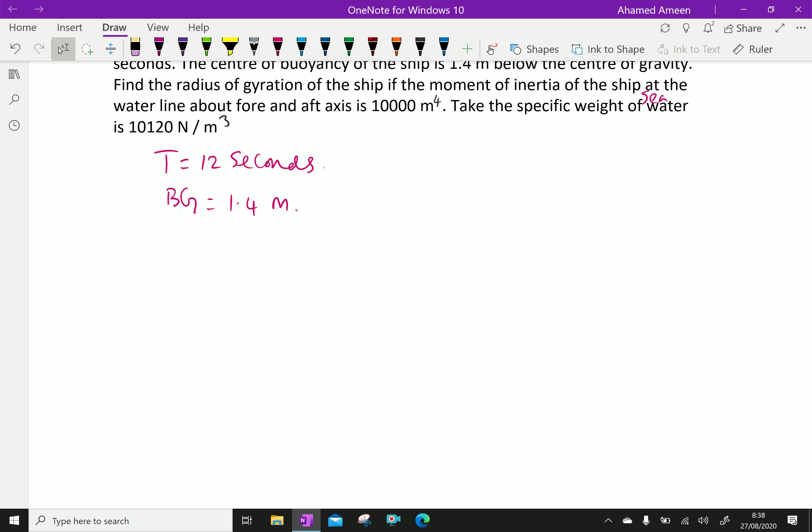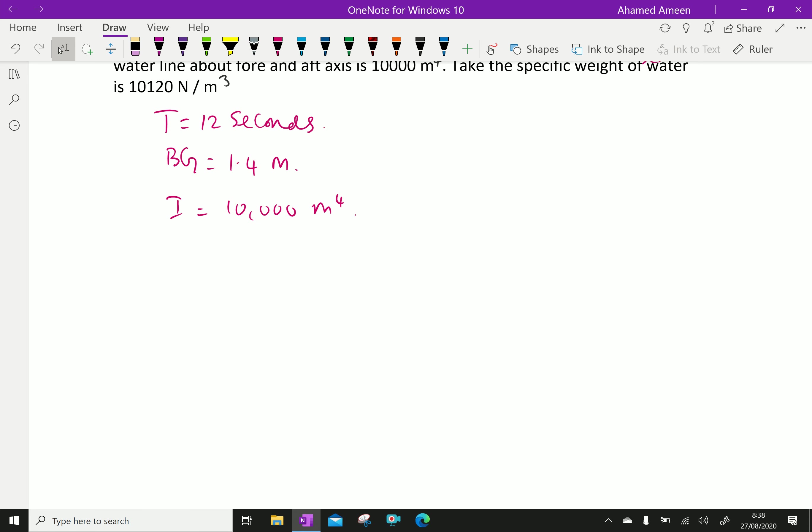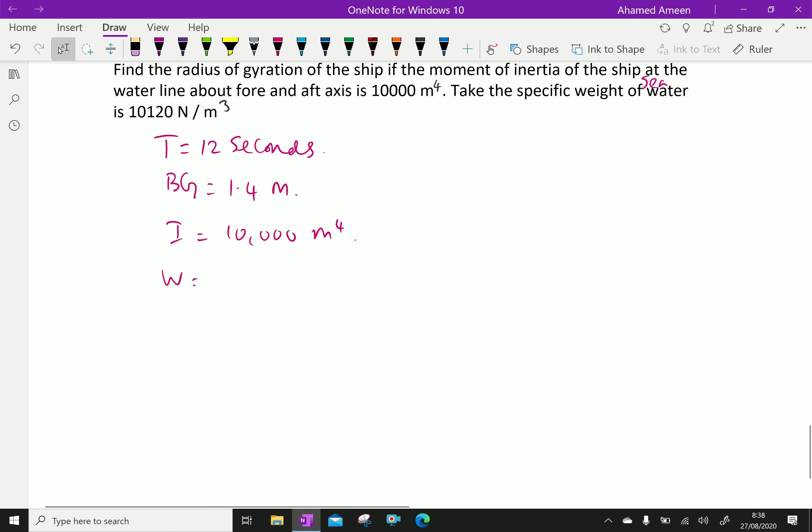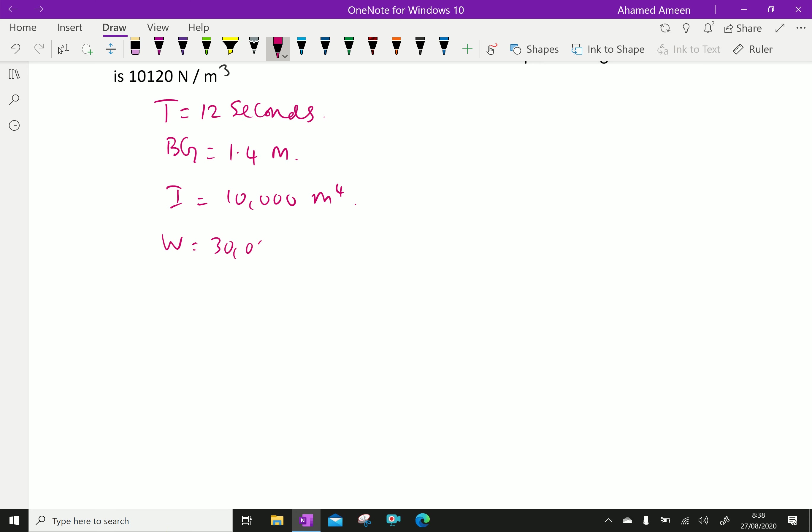The moment of inertia I is given as 10,000 meter power 4. Weight W equals 30,000 kilonewton into 1000 Newton. Let the radius of gyration equal K.